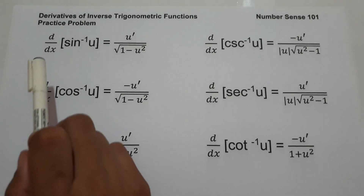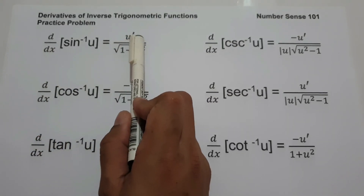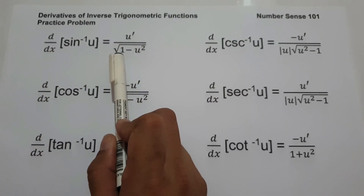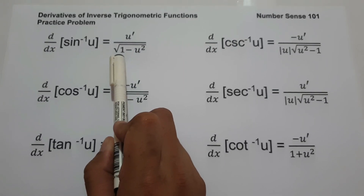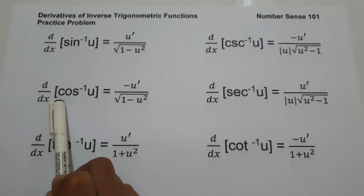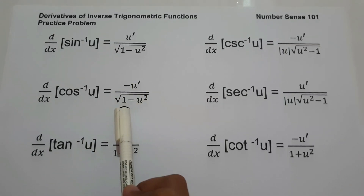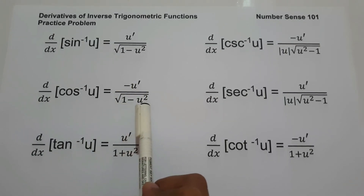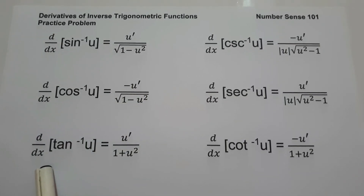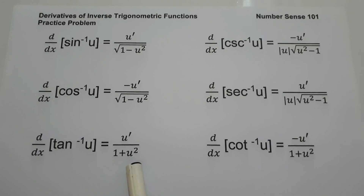The first one: the derivative of arc sine u is equal to u' over square root of 1 minus u squared. Then we have the derivative of arc cosine u is equal to negative u' over square root of 1 minus u squared. Next is the derivative of arc tangent u is equal to u' over 1 plus u squared.